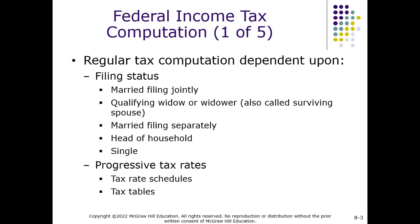To bring us back: when we know our filing status — covered in Chapter 4: married filing jointly, qualifying widow or widower, married filing separately, head of household, or single — and we know our taxable income, we can then calculate our income tax. We have a progressive tax rate system. As income increases, so do tax rates, and those are found in Appendix C in the back of your book.